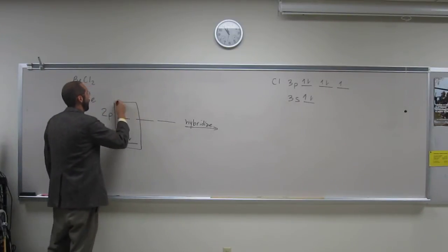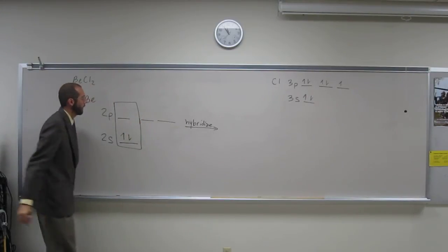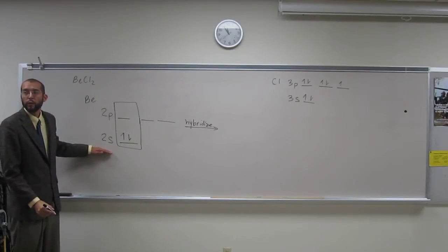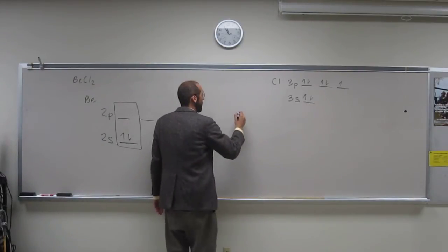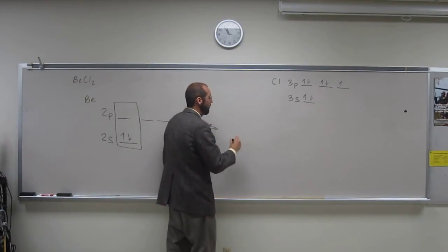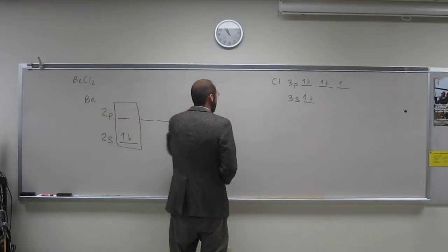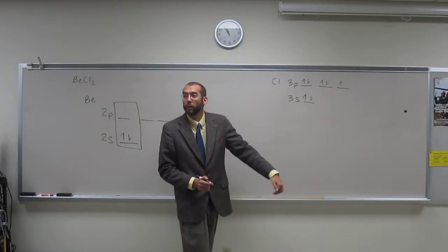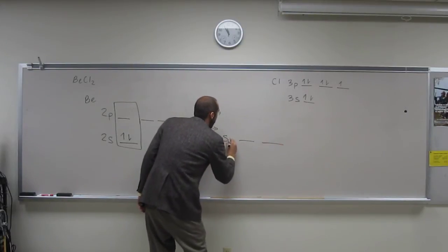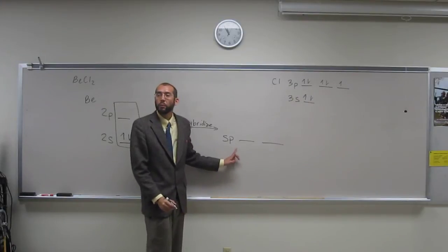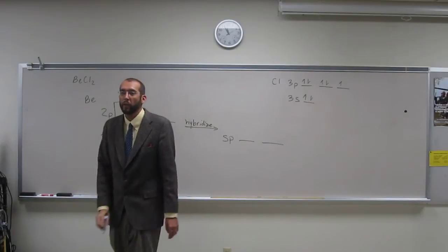So it's going to hybridize with one, its one 2s and one of its two p's. In other words, it's going to make two sp orbitals, right? Because as many as you hybridize is as many as you get out. As many as you stick in the blender is as many you get out of them. So those are your sp orbitals. And they're called sp. Why? Because we used one s and one p orbital to make them. Okay?